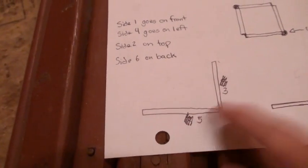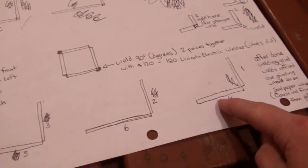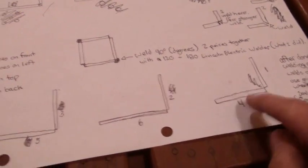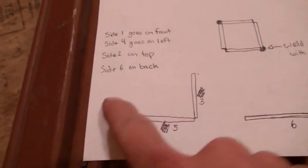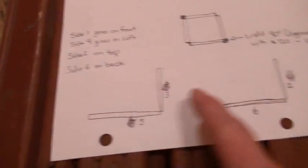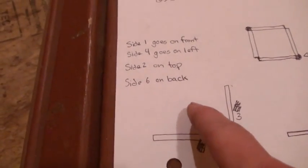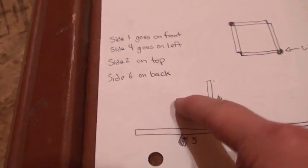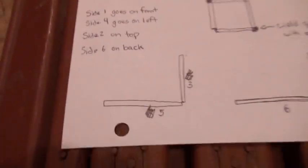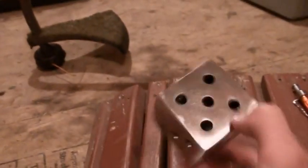You got side 5 on the bottom and side 3 on the right. Get your 1 and 4 welded together piece and put 1 on the front and 4 on the left. Then get your 2 and 6 piece and put 2 on the top and 6 on the back. That would give you this perfect dice. Took me a while to figure that out.